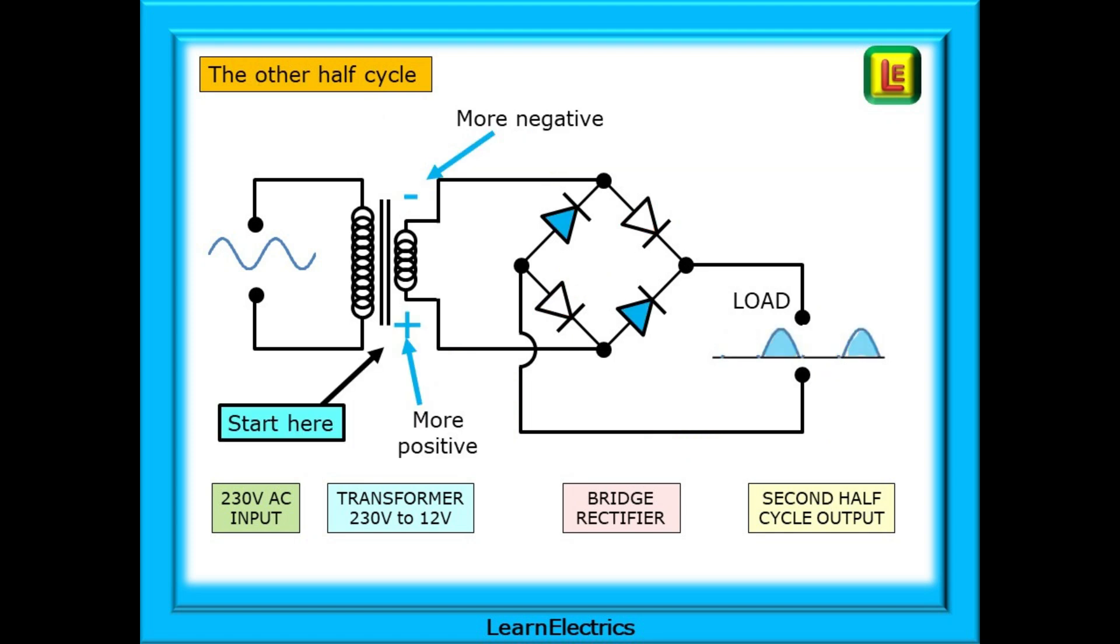Now the waveform has changed direction at the transformer. The bottom of the transformer is now more positive. Follow the path to the bridge rectifier, where there is a choice of two diodes. The white diode is reverse biased and blocks any current. But the blue diode is forward biased and conducts, allowing half cycles to the load. These are also positive half cycles. What were negative half cycles have been turned upside down by the bridge. The current passes through the load, through the second blue diode, and back to the negative of the transformer. And the whole cycle then repeats 50 times a second.